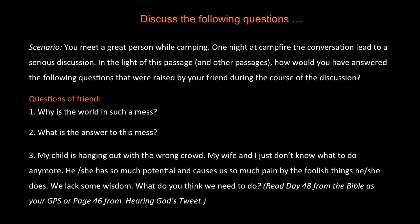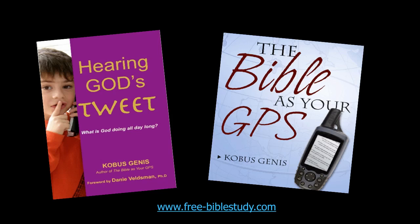The friend also reflects on his family: 'My child is hanging out with the wrong crowd. My wife and I just don't know what to do anymore. She has so much potential and causes us so much pain by the foolish things she does. We lack wisdom — what do you think we need to do?' You can get some direction by reading day 48 from the Bible as Your GPS, or page 46 from Hearing God's Tweet, or visiting the website for more information.